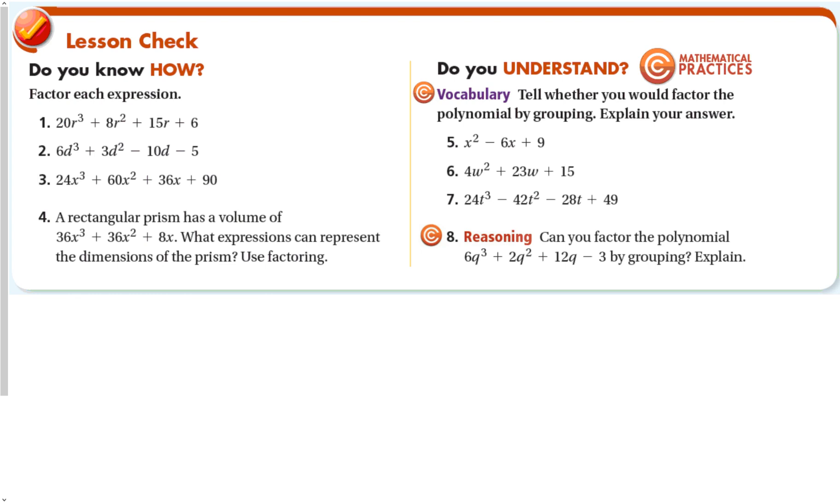Let's look at number 8 before we finish here. Can you factor the polynomial by grouping? Well, let's try. 6 Q to the third plus 2 Q squared plus 12 Q minus 3. Common factor there is 2 Q squared, which leaves me with 3 Q plus 1.